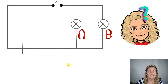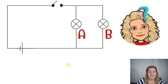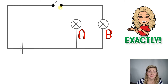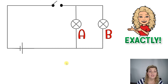Go ahead and pause it and take a look at it. Let's look at the answer. So our answer is none of them will light up. If we start at the negative end of our battery and we go around, we immediately come to an open switch or a gap in our circuit. Therefore, we can never make it to the branch that has light bulb A or the branch that has light bulb B. Therefore, electricity will not be flowing — there will be no current flow at all and no light bulbs will light up.